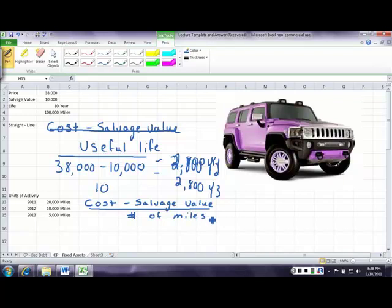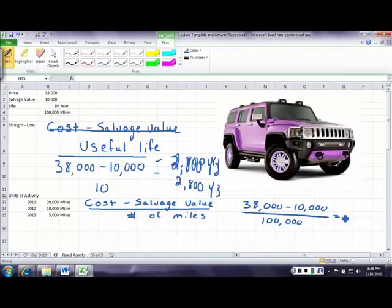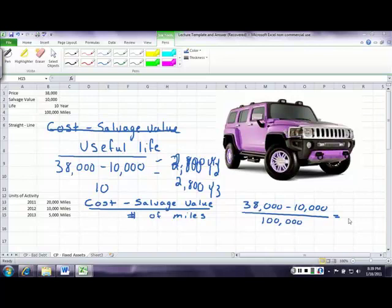In this problem, we had a cost of $38,000, a salvage value of $10,000, and we're going to divide by 100,000 miles. What are we saying is our cost per mile? We're saying that's 28 cents a mile.